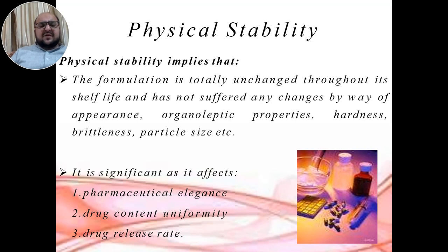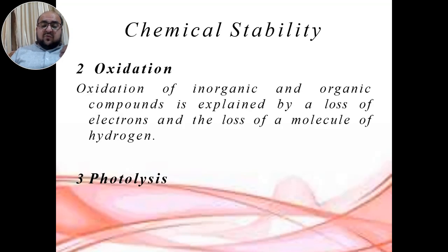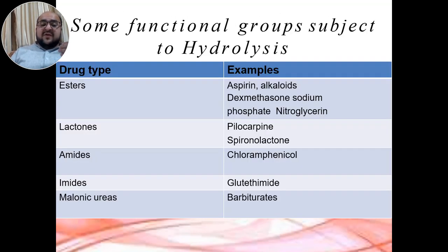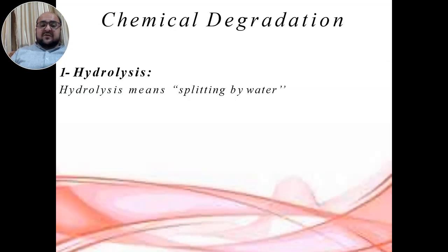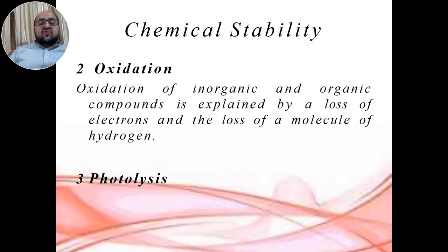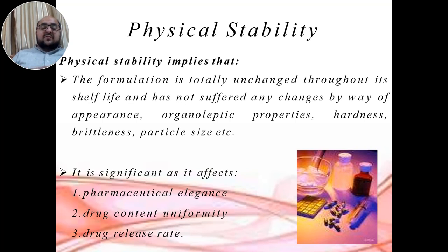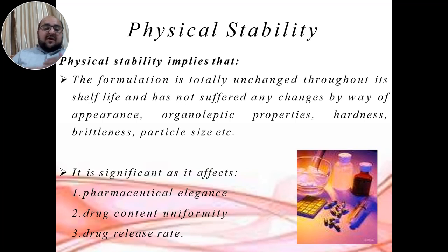In today's lecture, we simply discussed chemical degradation and its different processes: oxidation, photolysis, and hydrolysis — three processes that explain how chemical degradation takes place. In the next lecture, we will discuss physical stability and physical instability, including the different contributing factors that can lead a product toward physical instability and what factors are required for physical stability.